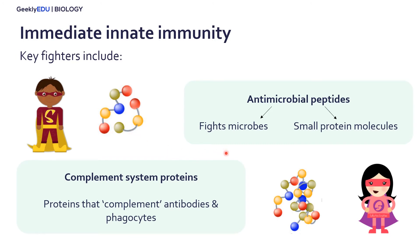The other really important fighter within our immediate innate immunity are complement system proteins. A protein is basically a larger version of a peptide — here we see a figure of a protein, and we see a greater number of amino acids strung together, and also a 3D structure, which is another important difference between proteins and peptides. Complement system proteins are proteins that actually complement other important immune proteins and cells such as antibodies and phagocytes, which are explained further in the other video titled Elements of Immunology. Today we'll talk more about antimicrobial peptides and the complement system within our immediate innate immunity.